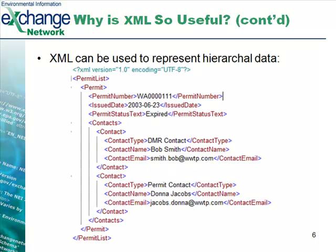Another useful aspect of XML is that it can be used to represent hierarchical data. In the example below, we've expanded the permit list to include two contacts. We have a list of permits with one permit, and for this permit we have a contacts tag that contains two individual contacts — a DMR contact with a name and email address, and also a permit contact with a name and address. By nesting data within other data, you can create complex representations of information several levels deep. A flat file would need separate files since it can only represent a single table, whereas XML can contain many different tables and express the relationships between data elements.